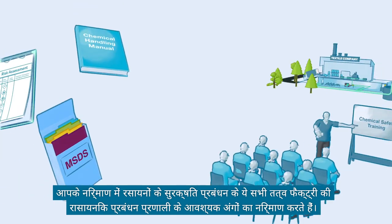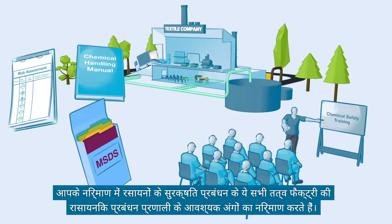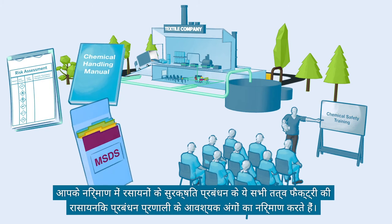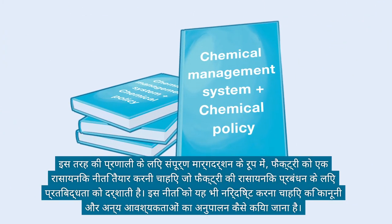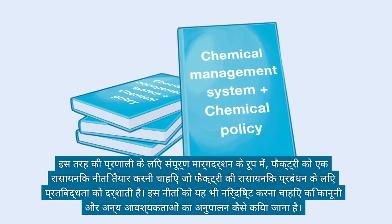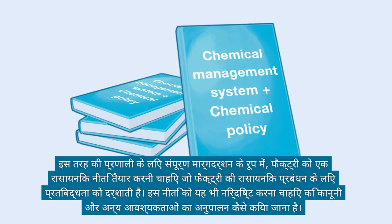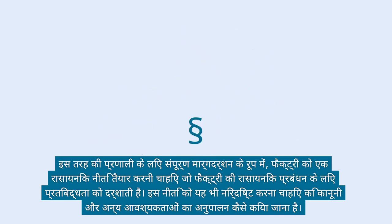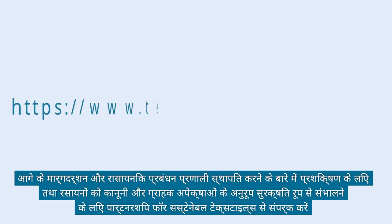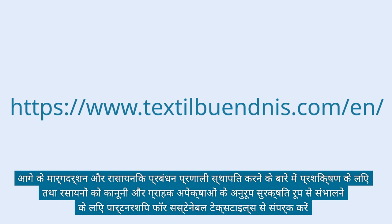All these elements for safely managing chemicals in your production form essential parts of the chemical management system of a factory. As an overall guidance for such a system, the factory should formulate a chemical policy that outlines the factory's commitment to chemical management. The policy should also specify how compliance with legal and other requirements is to be achieved. For further guidance and training on how to set up a chemical management system and safely handle chemicals in line with legal and customer expectations, contact the Partnership for Sustainable Textiles.